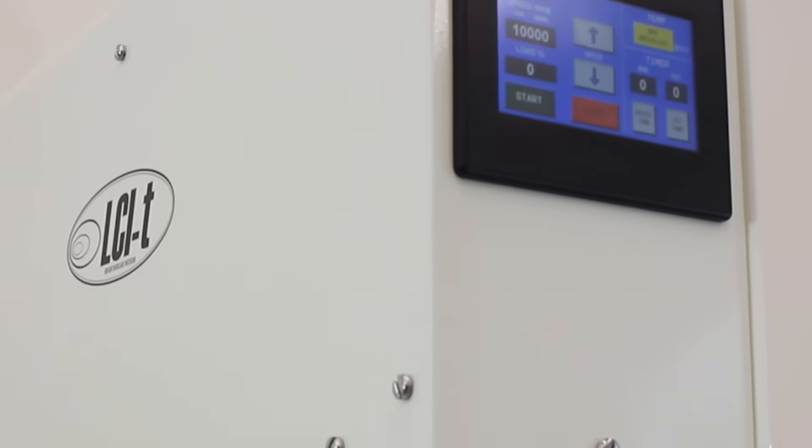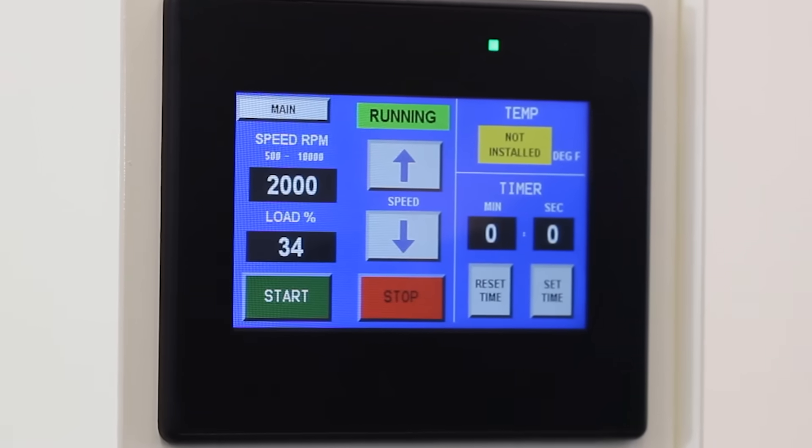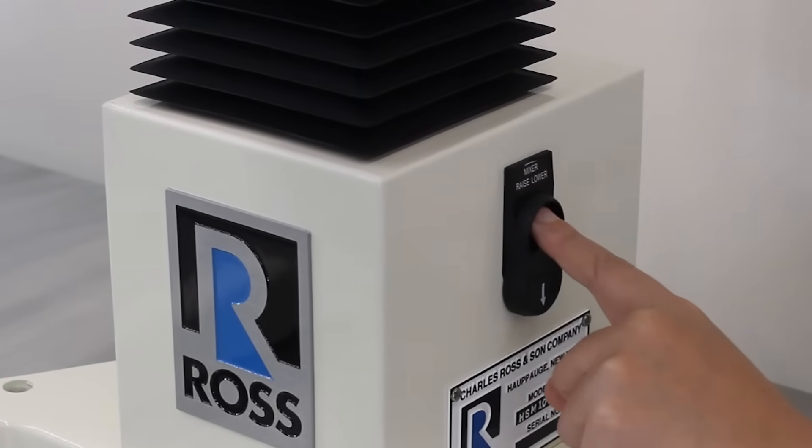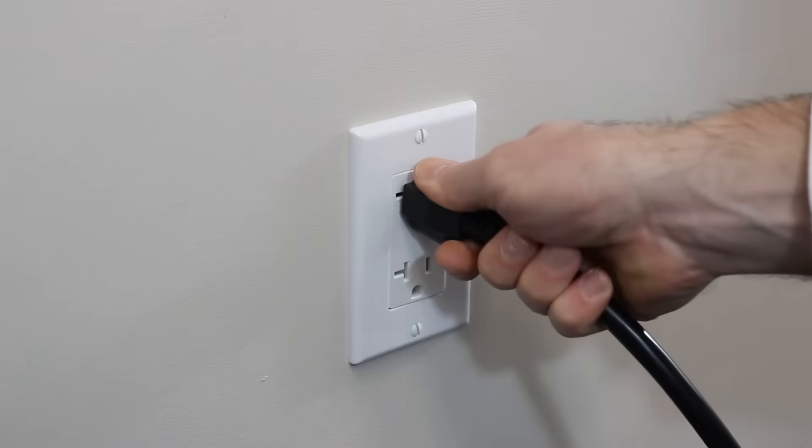The LC-IT features a touchscreen interface with speed display, cycle timer, and readouts for temperature and power consumption. A user-friendly raise-lower lift control operates from standard outlet voltages.